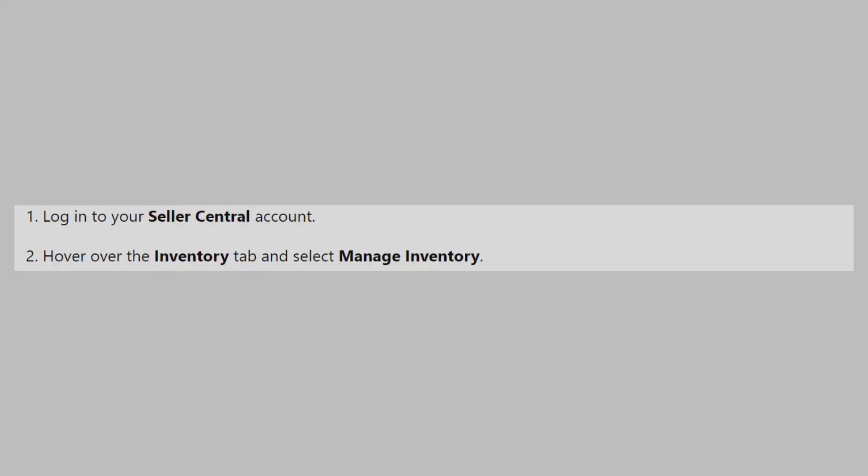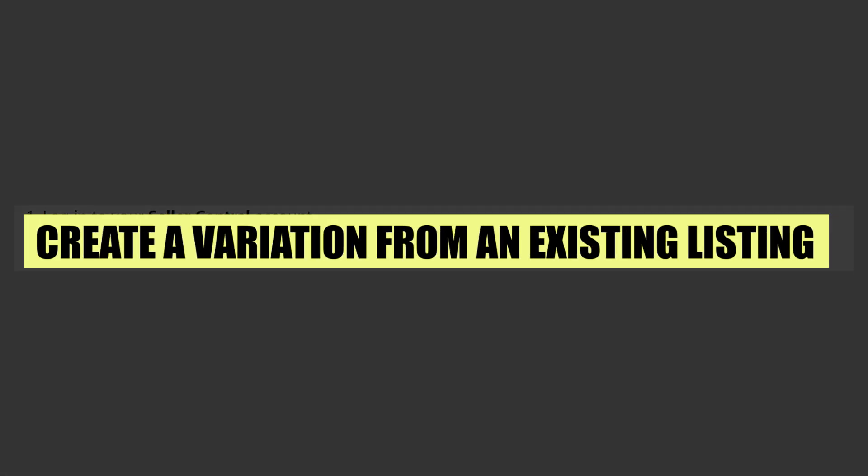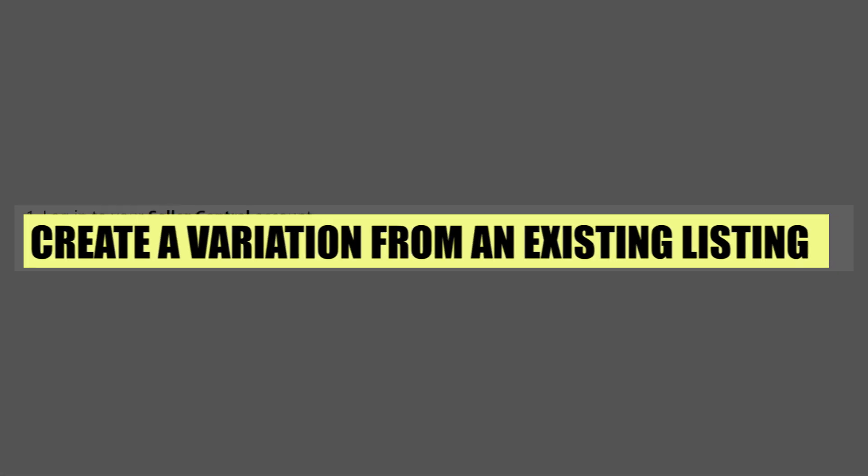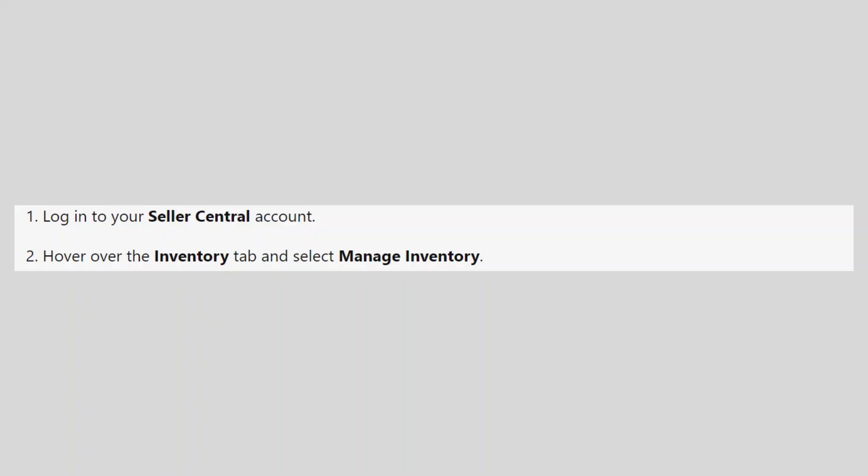In this video, we will show you how to create a variation from an existing listing on Amazon Seller Central. If you want to get started with Amazon, use the links in the description.